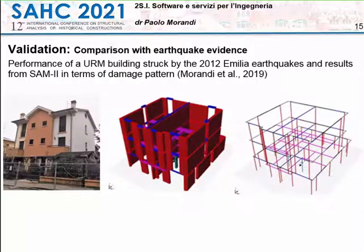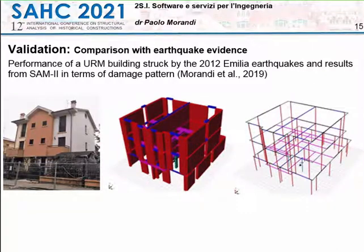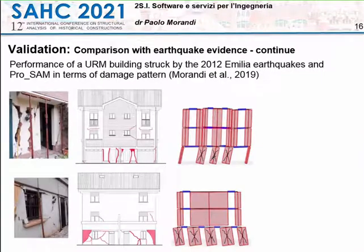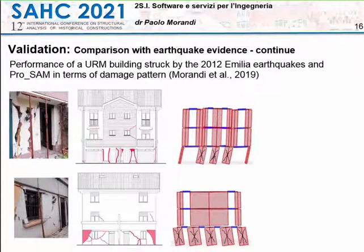Finally, I want to show a validation example comparing the performance of a reinforced masonry building struck by the 2012 Emilia earthquake with the program results in terms of damage pattern. As you can see, the building was severely damaged at the base floor story, with huge shear damage in the piers and walls, featuring large bi-diagonal cracks. The program was able to estimate in a good way the failure mechanism, particularly the soft story formed at the base of the building.